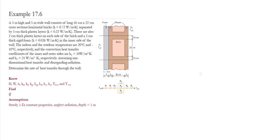Example 17.6. We have a wall that is 3 meters in height and 5 meters in width. This wall is made out of repetitive sections of brick with a cross-sectional area of 22 centimeters by 16 centimeters. The bricks are separated by a 3-centimeter thick plaster layer and have a 2-centimeter plaster layer on each side. There is also a 3-centimeter rigid foam on the inner side. The inner and outer temperatures are 20°C and -10°C respectively, with convection coefficients of 10 and 25 W/m²K. We need to determine the rate of heat transfer through the wall.